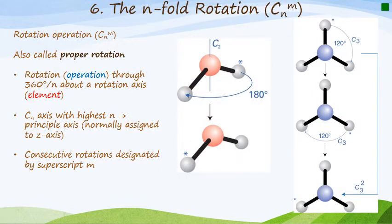Let's move on to the second one. We're going to deal with three in this section of the unit. And this one that we're dealing with here on slide six is called the n-fold rotation. And it's given the symbol C.